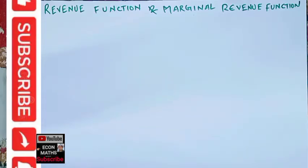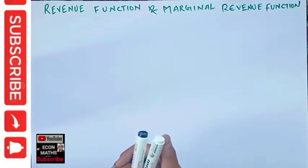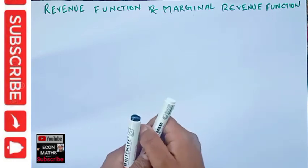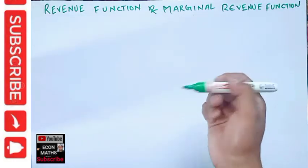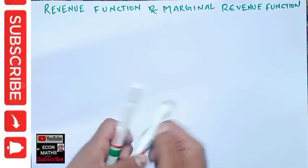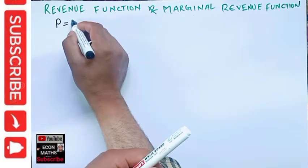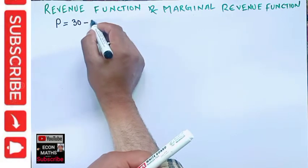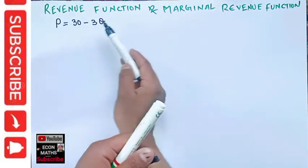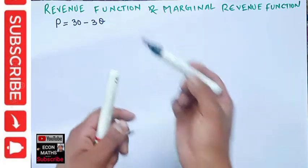In this video we will learn how to find the revenue function and marginal revenue function from a given demand function. For a given product, the relationship between price and quantity is given by P = 30 minus 3Q. This is the relationship between price and quantity, and it is also called the inverse demand function.